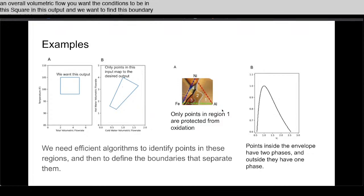The second problem is a ternary alloy of nickel, iron, aluminum. What we find in this ternary phase space is that anything in region one ends up being protected against oxidation because it forms an aluminum skin and everything else suffers from oxidation. We want a way to find this boundary using these classifiers.